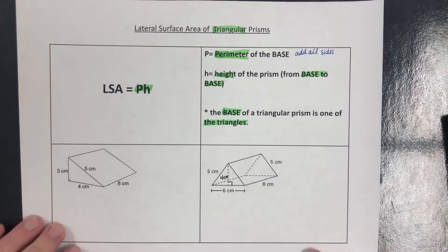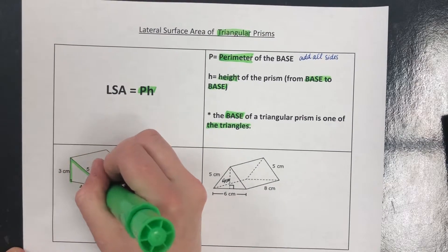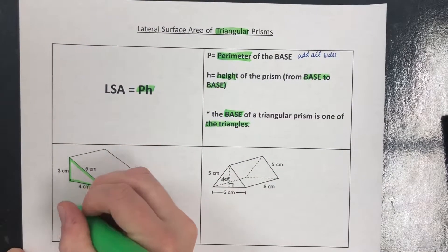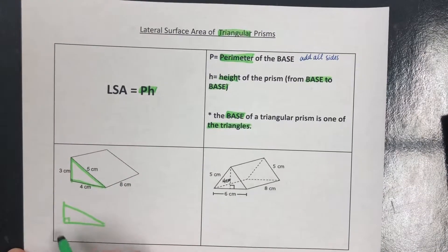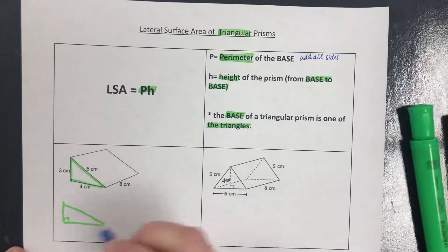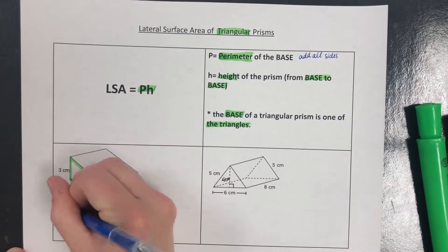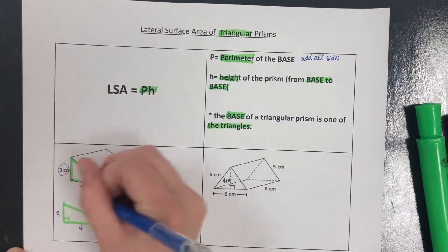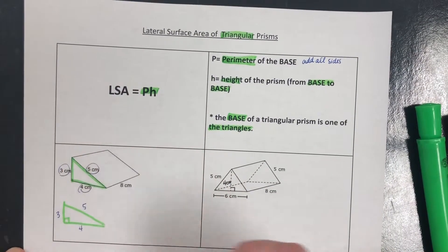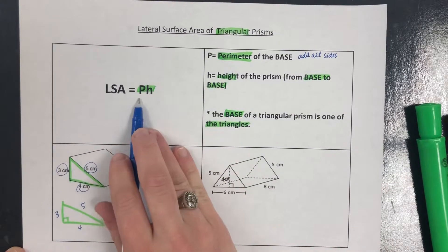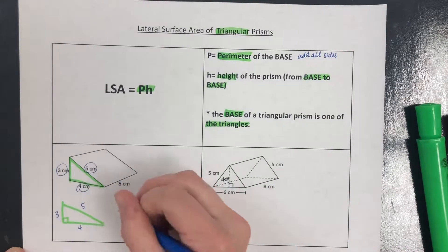Just like before, we need to locate the base — the triangle — highlight it, and then redraw. I'm going to keep that right angle on the bottom, and label my sides. The bottom piece of the triangle is 4, the other side is 3, and then the hypotenuse side is 5. Since our formula is P times H, the perimeter of the base comes from this redrawn triangle.